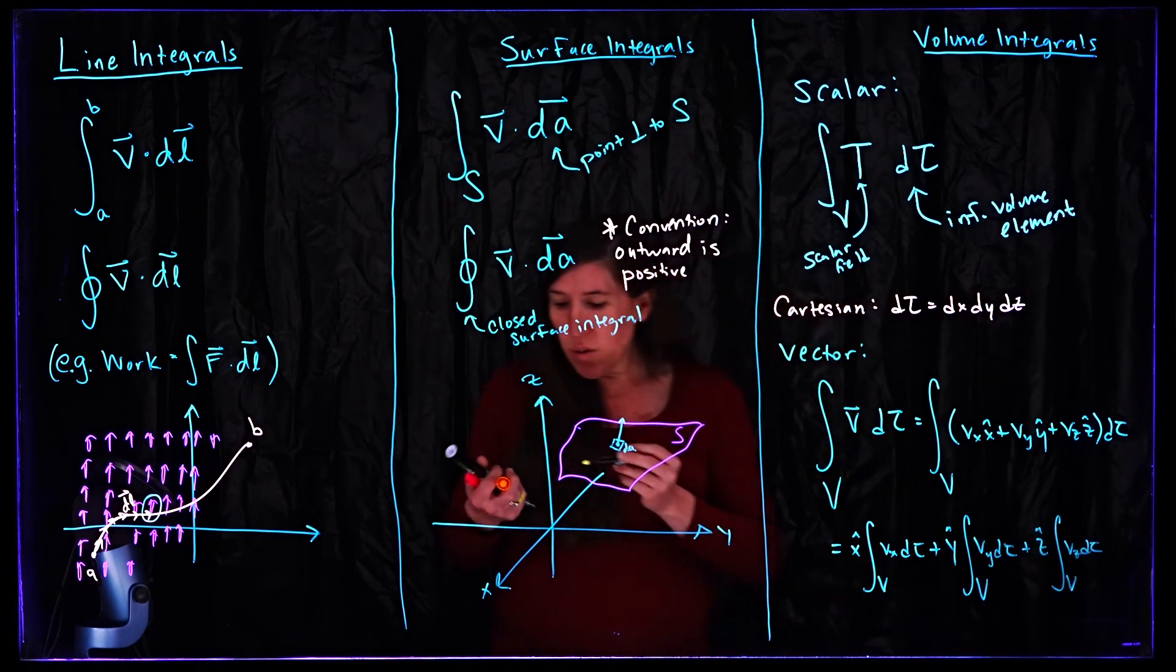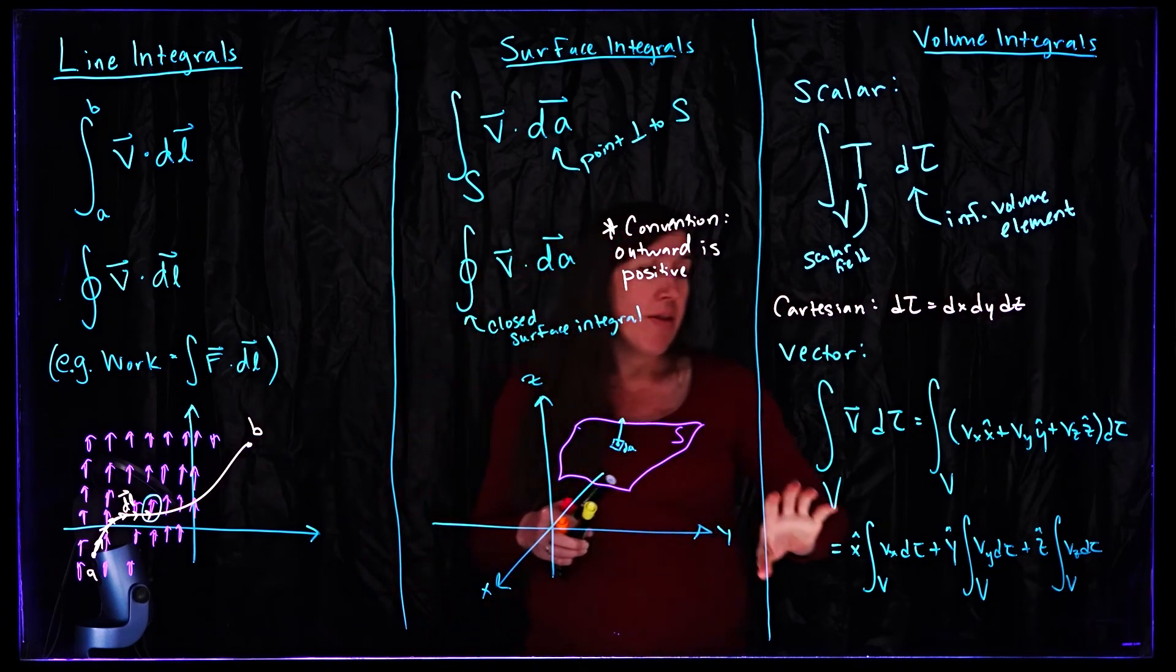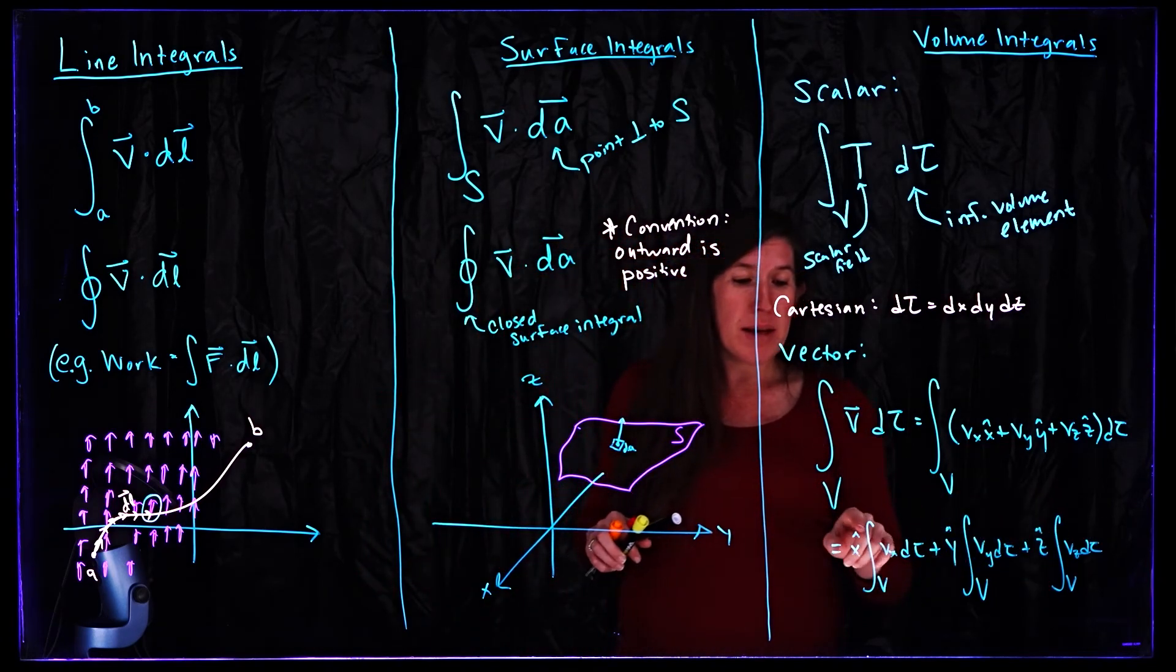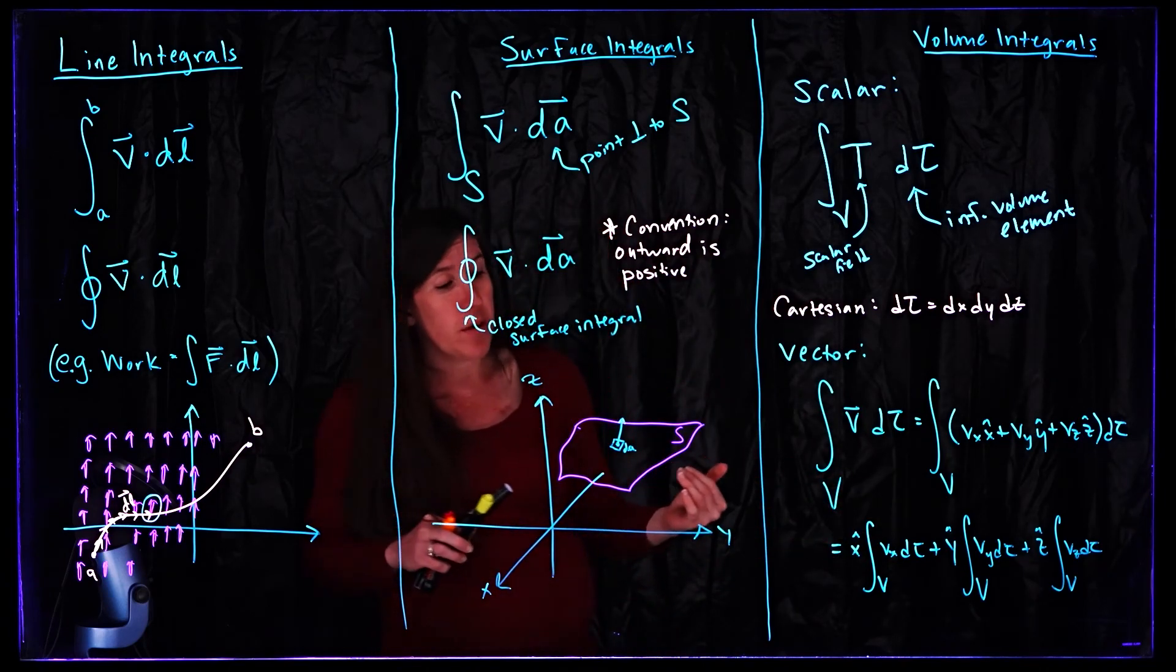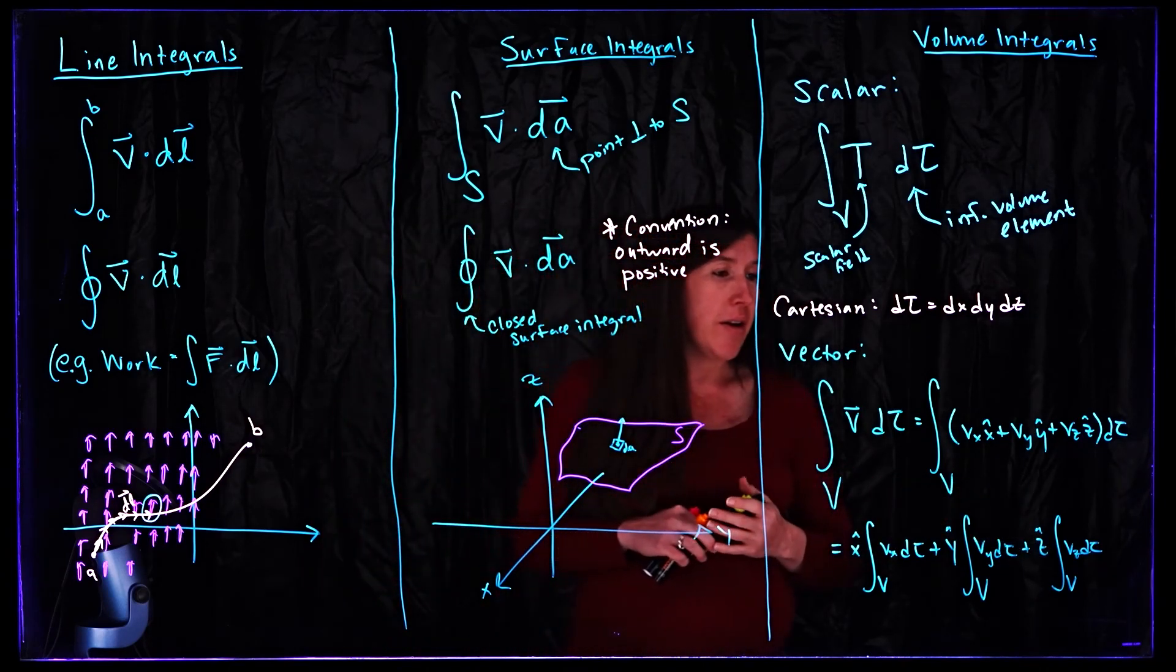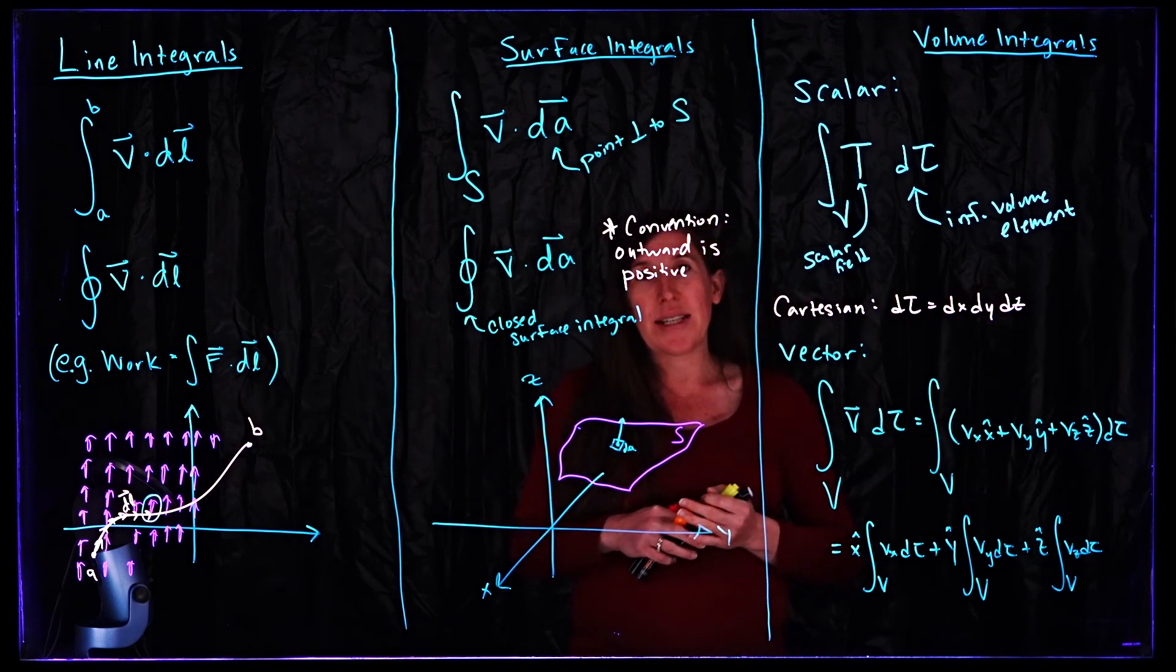When we start to work with perhaps spherical coordinates or cylindrical coordinates then these things are going to get a little messier because your unit vectors there are no longer constant so they can't just be pulled out of the integral the way we have here. In Cartesian they are constant so these things really simplify a lot.